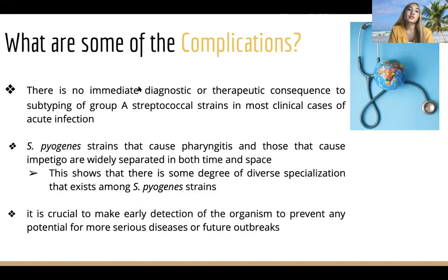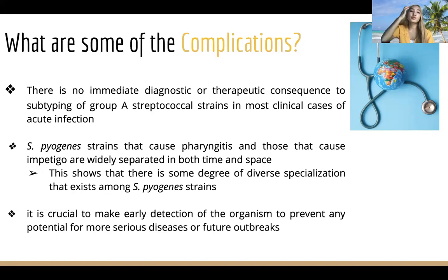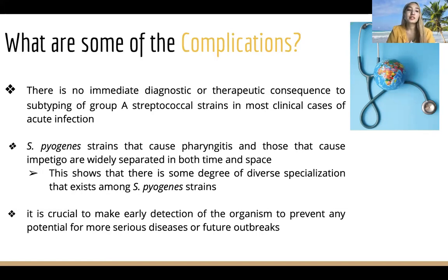A key complication is that there is no immediate diagnostic or therapeutic consequence to subtyping Group A Streptococcus strains in most clinical cases of acute infection. The strains that cause pharyngitis and those that cause impetigo are widely separated in both time and space, meaning specialization differences exist among strains. Early detection of the organism is therefore important to prevent more serious disease and future outbreaks.